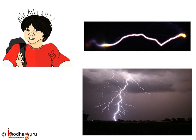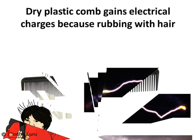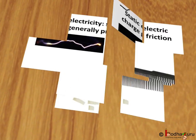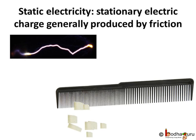How does accumulated charge produce a streak of bright light? Let us find the answer. Comb your dry hair with a dry plastic comb. Now take the comb near small pieces of paper — you will see the comb attracts the paper pieces. This is because the comb has acquired some charges due to rubbing with dry hair, making it a charged object. Charged objects attract uncharged objects.